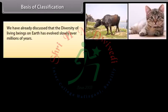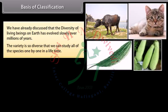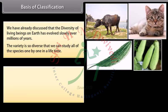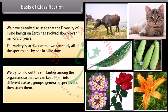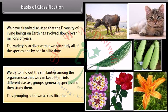We have already discussed that the diversity of living beings on earth has evolved slowly over millions of years. The variety is so diverse that we cannot study all of the species one by one in a lifetime. So we try to find out the similarities among organisms so that we can keep them into different classes, groups, genera or species and then study them. This grouping is known as classification.